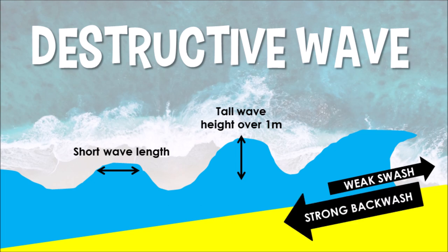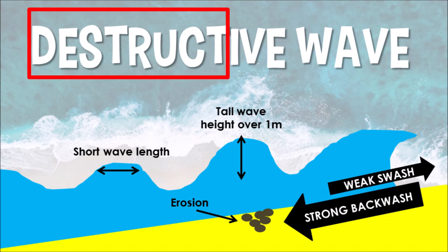When the wave drags anything it comes into contact with off the coastline back into the sea or ocean — that's because it's got so much energy. And because of this, they will erode our coastlines. They will pick up sand, rocks, and sediment, and wash it back into the sea or ocean. And this is why destructive waves are called destructive waves — they destroy our coastlines a little bit at a time.